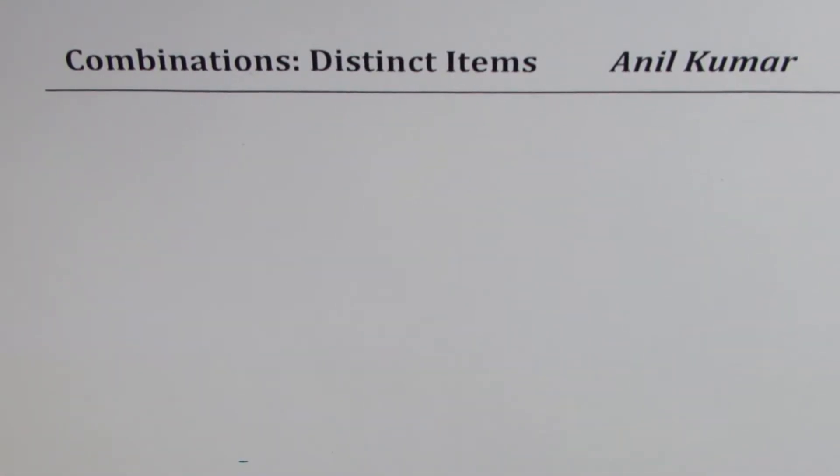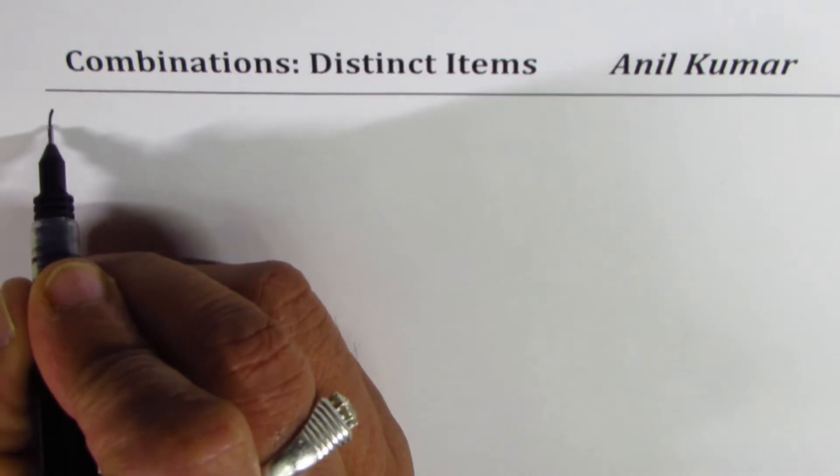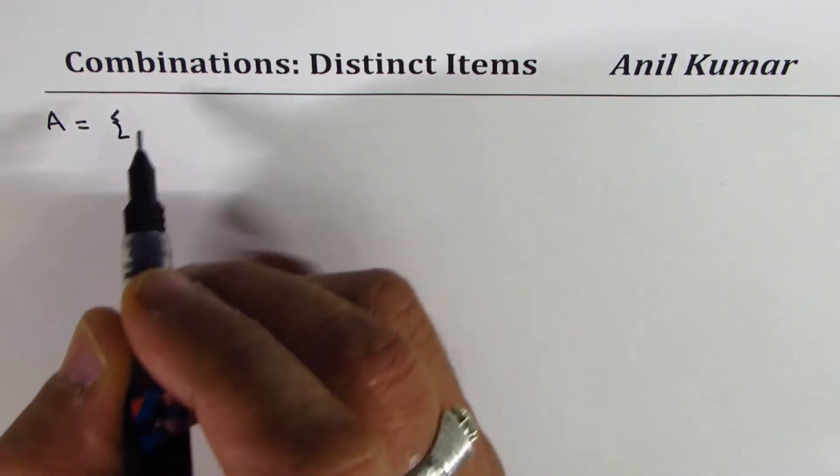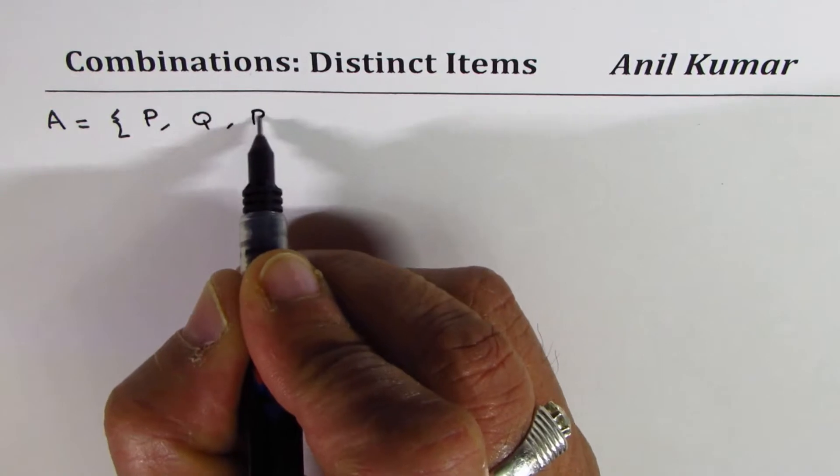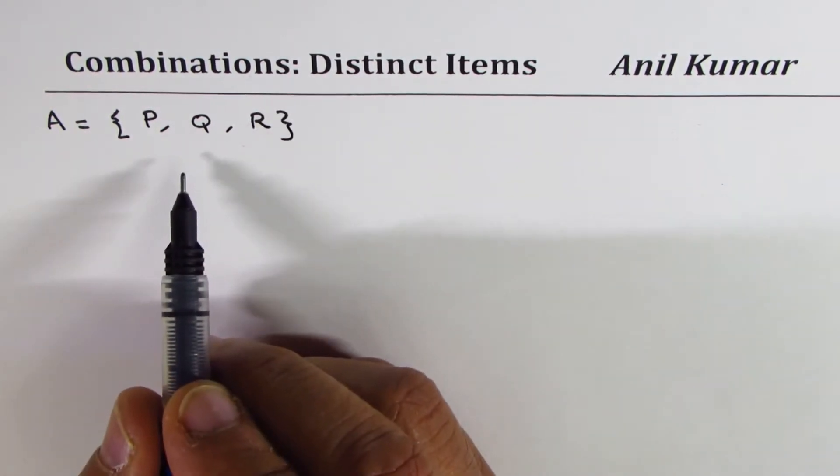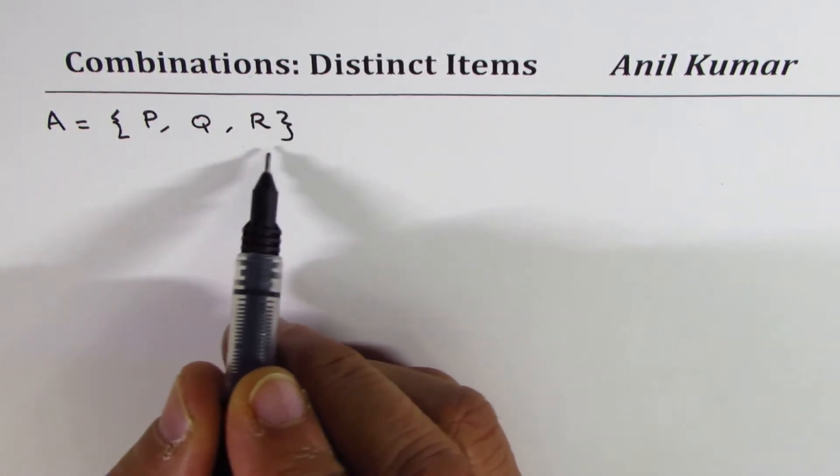I'm Anil Kumar and in this video we will learn very important concepts about combinations with distinct items. So let me begin with a simple set of items. Let's say we have a set A in which we have few items and let's name them as P, Q, R. Let's say we take three items.